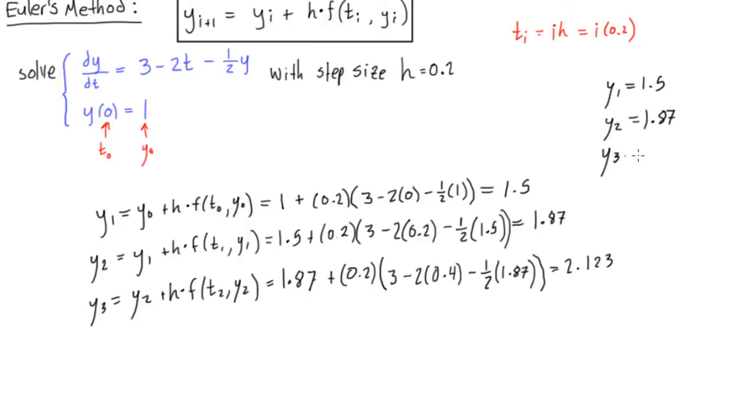So there we go, y3 is going to be equal to 2.123. So we could just keep going with this, we're using this defined step size that we have. But we can stop there, as you see, it's just very repetitive. So we don't need to keep going, this is just to show you the iteration and how it works.